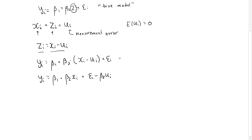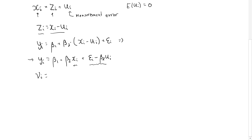So now I actually have a model where yi is explained by xi. But the error term of this model is not epsilon_i — it's actually a combination of the error term of the true model and the measurement error. If we call this nu_i, then nu_i = epsilon_i - beta2*ui. This is the error term of our regression — the one we run where x explains y.